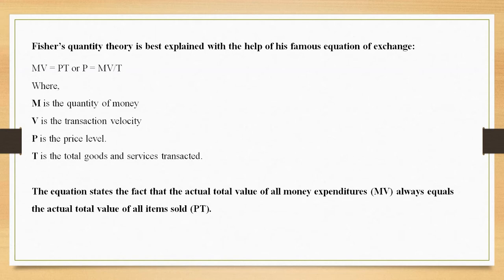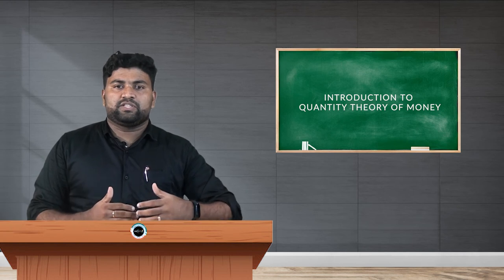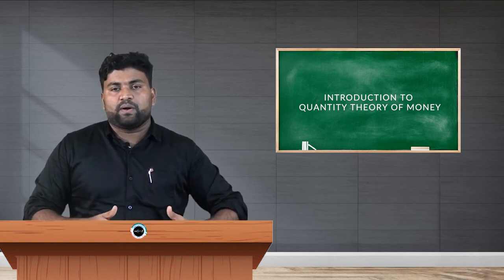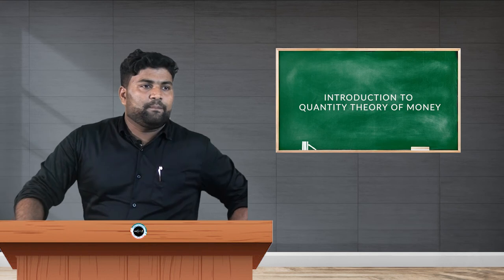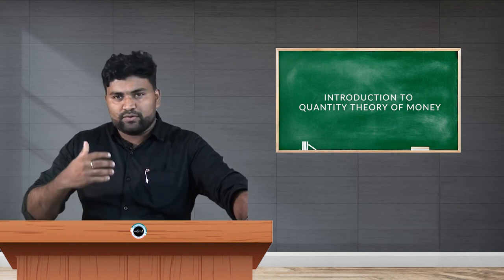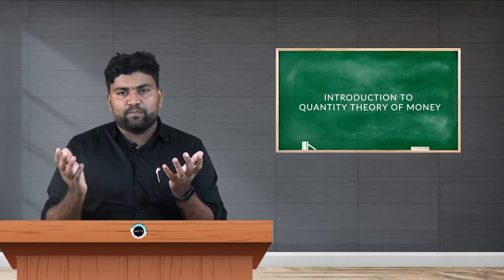MV = PT, or rearranged as P = MV/T, where M is the quantity of money — the total volume of money in circulation in the economy; V is the transaction velocity of money, meaning the way money passes from one hand to another in the economy; P is the price level; and T is the total goods and services transacted.